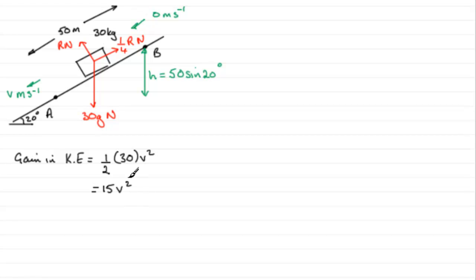Well, we can't do much with that because we don't know what v is. But also, it loses gravitational potential energy as it goes from B to A. So if we look at the loss in gravitational potential energy, then we know that's mgh. And h we worked out from basic trigonometry from a triangle running through here would be 50 sine 20 degrees.